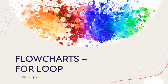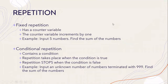In this video, we will learn more about flowcharts, and in particular, we will look at how the for loop works. When we talk about the for loop, we actually mean repetition is taking place. With regards to repetition, there are two types of repetition that we can have.